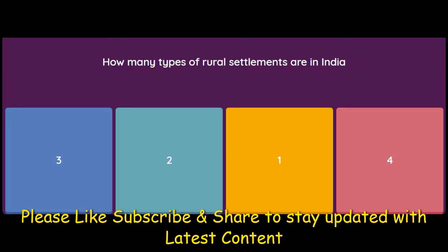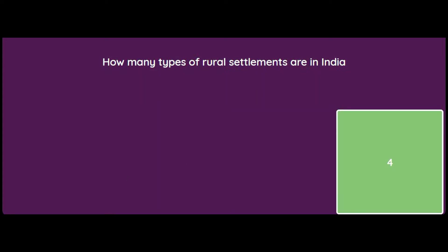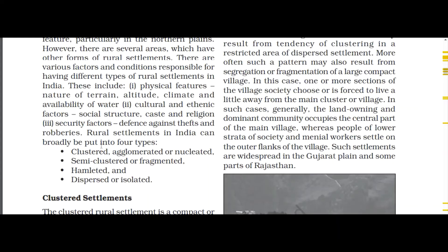How many types of rural settlements are there in India? Three, two, one, or four? The answer is four. According to the book, rural settlements in India can broadly be put into four types: clustered/agglomerated/nucleated, semi-clustered or fragmented, hamleted, and dispersed.